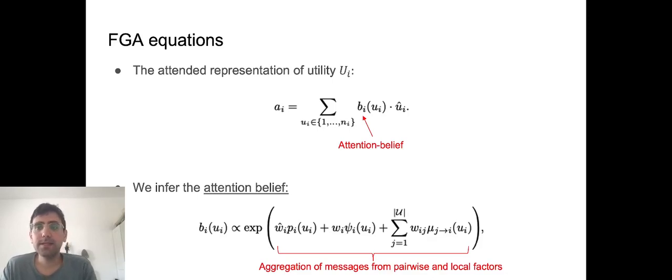What we did is combine the LRP method with the FGA model. The FGA uses the concept of a belief vector. You can think of it as the aggregation of messages from all pairwise factor dependencies sent to one utility. And with that belief vector, we then have the attended vector representation of utility I.